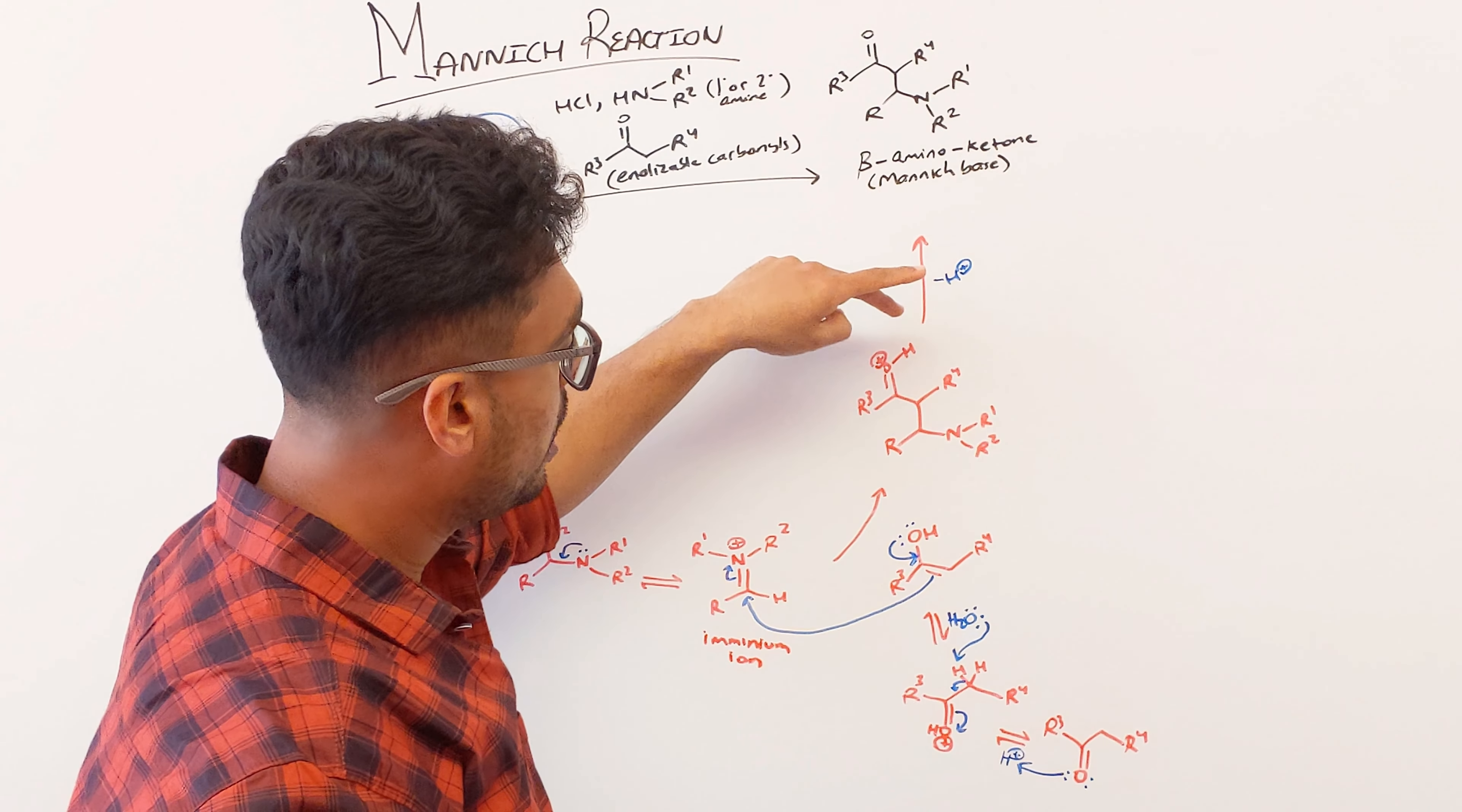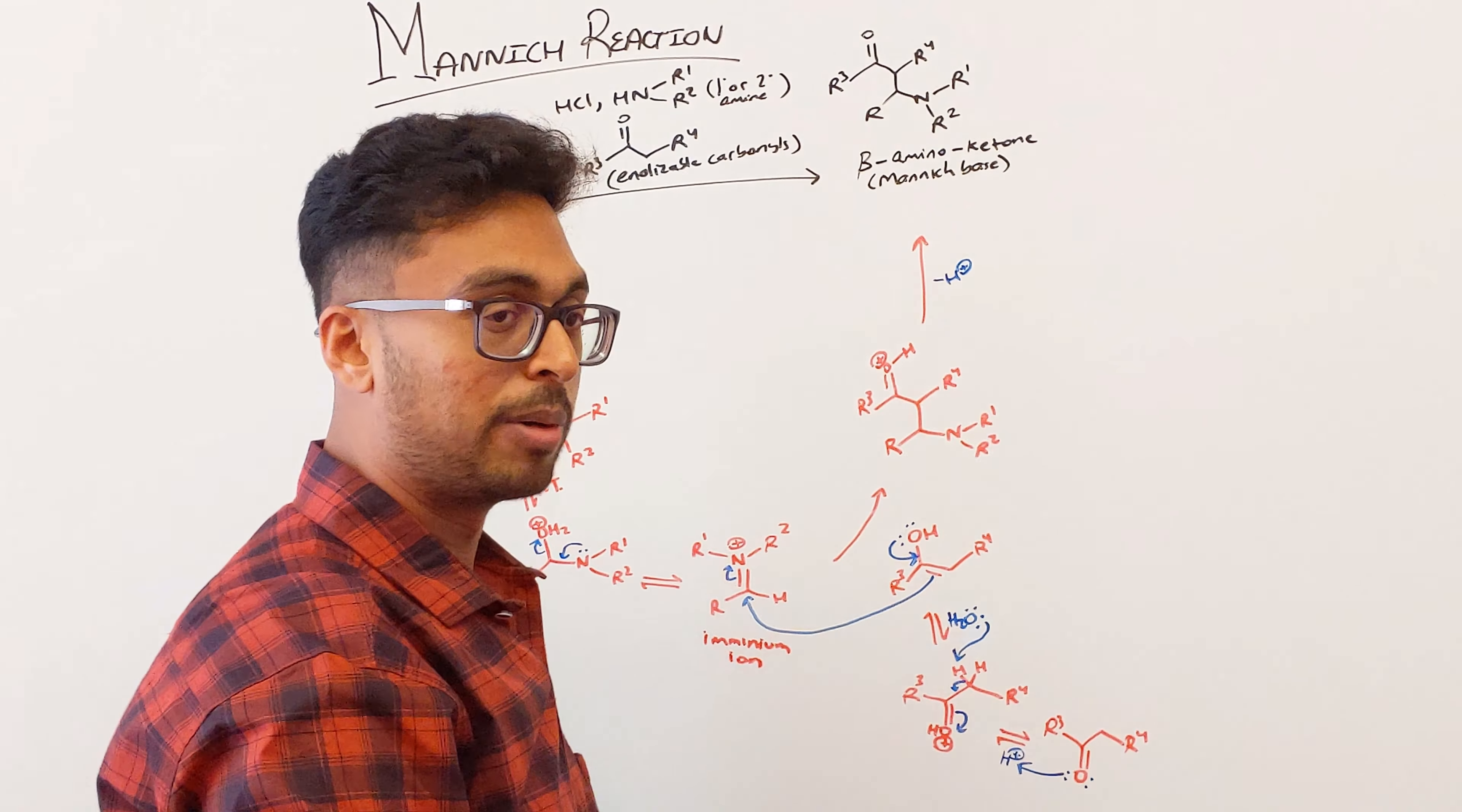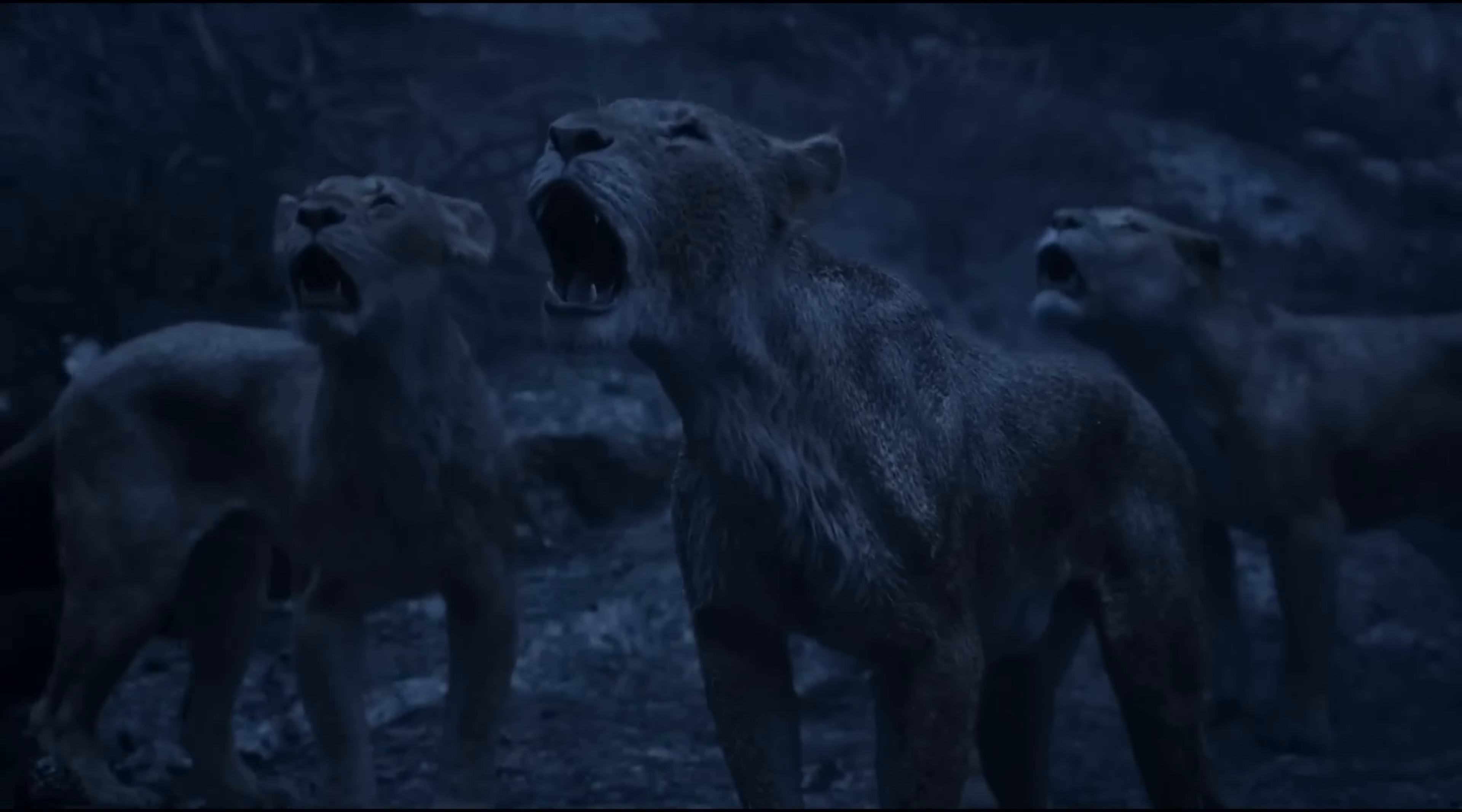Now the last step is going to be deprotonation. So that H is going to be picked up by water and you're going to generate this beta-aminoketone and that's all for a Mannich reaction.